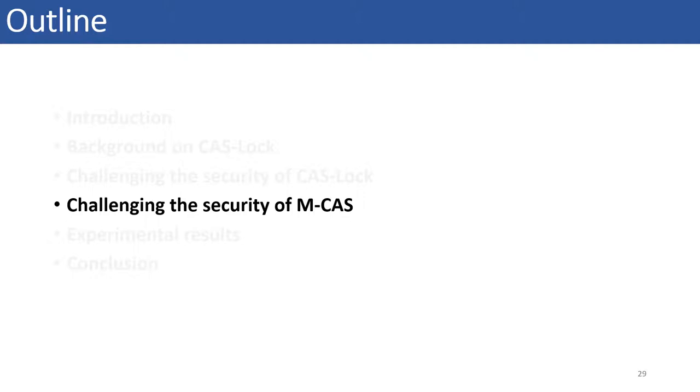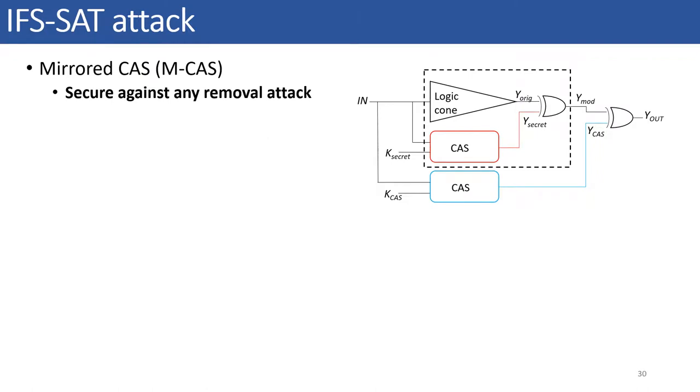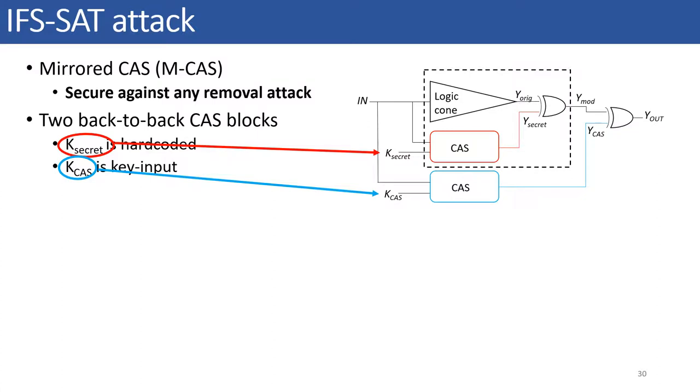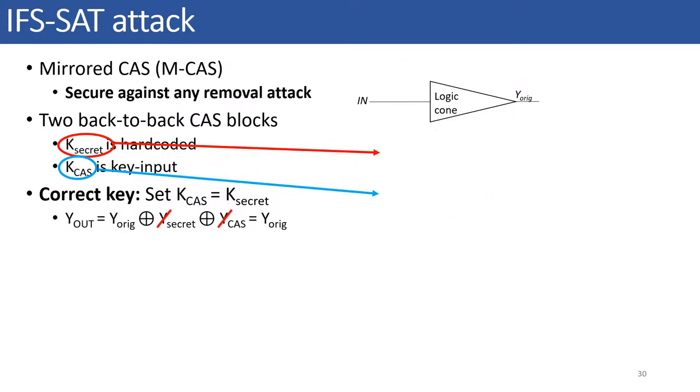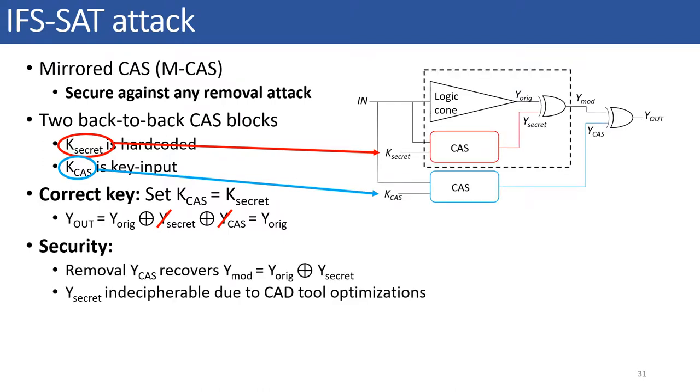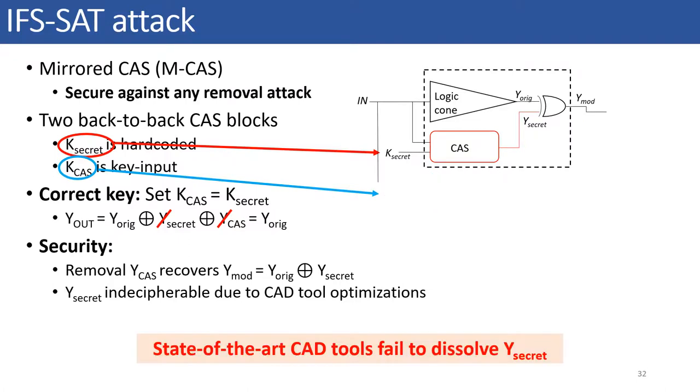We successfully launched our proposed attacks on the CASLOCK defense to first recover the original circuit and then to recover even the secret key. Next, we will look into another variant of CASLOCK which is known as mirrored CAS or MCAS. In mirrored CAS or MCAS defense, two CAS blocks are attached back-to-back as shown here. There are two keys used in MCAS. One is hard-coded in the design while the other key is fed as user input. Now, only when the Ksecret equals KCAS, Yout equals Yorig and the original circuit gets recovered. Removing the YCAS block will no longer return the original circuit. It will now return a modified circuit which consists of original and hard-coded secret key. Ideally, Ysecret should be indecipherable due to CAD tool optimizations making the hard-coded component dissolved in the original circuit. However, the state-of-the-art CAD tools are not secret-centric and thus fail to successfully dissolve Ysecret within the original design. Thus, identifying Ysecret and removing it returns the original circuit.